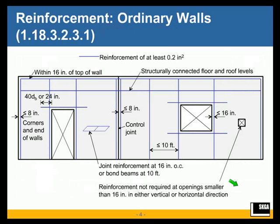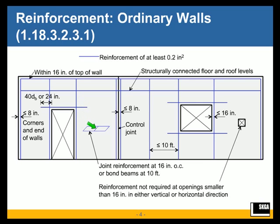The prescriptive reinforcement for an ordinary shear wall is given in Section 118.3231. The blue lines shown here represent reinforcement of at least 0.2 square inches — typically a number 4 bar or greater — required within 16 inches of the top of the wall, horizontal reinforcement at any structurally connected floor or roof levels or diaphragm, and horizontal reinforcement above and below window openings, extending at least 40 bar diameters or 24 inches.